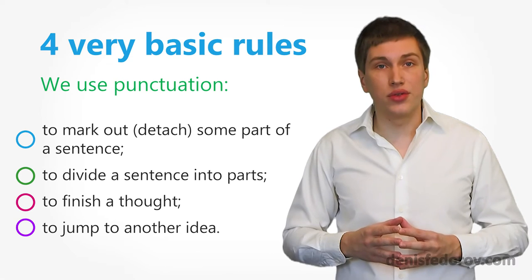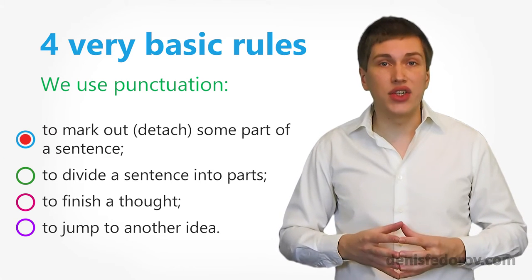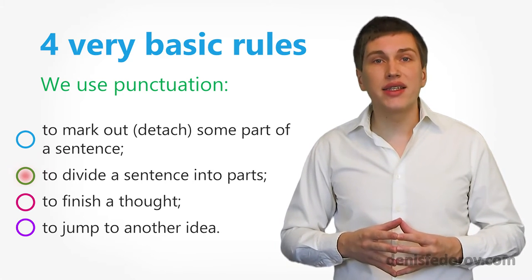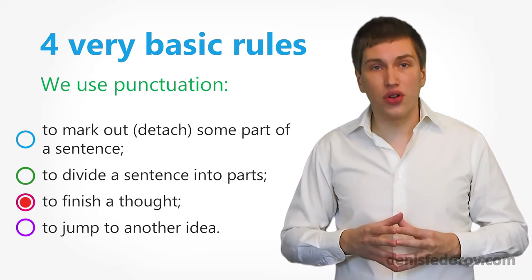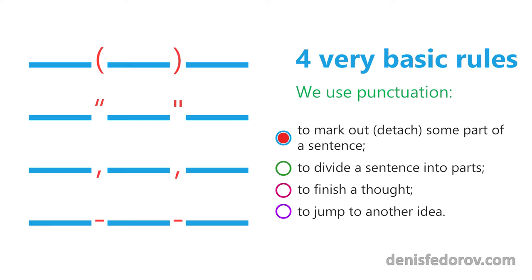On practice it means that when you are unsure whether to put or not to put a punctuation mark, you better use it — especially if it is a comma. Now four very basic rules. Punctuation marks are used for four main purposes: to mark out or detach some part of the sentence; to divide a sentence in two parts; to finish the thought; and to jump to another idea. We mark out or detach a part of the sentence with parentheses, quotation marks, pair commas, and a pair of dashes — we place the part inside two punctuation marks, the opening and closing mark.